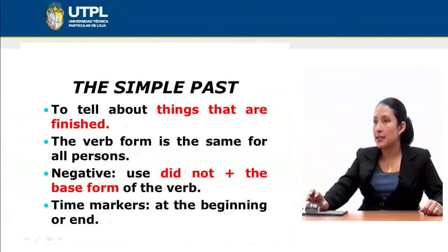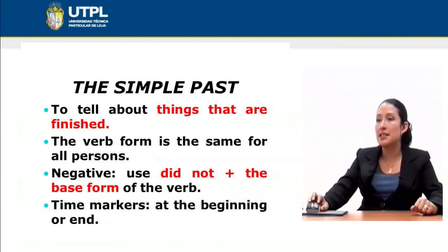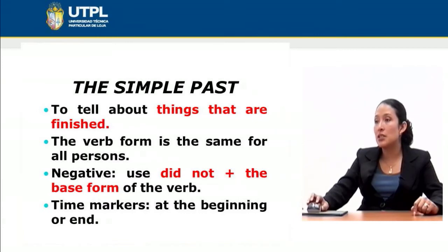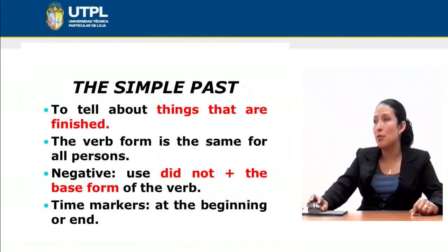Now let's move to the simple past tense. Since you know the simple present and the present progressive, it is time to understand the simple past. This structure is used to talk about things that are finished — actions that occurred in the past. The verb form is the same for all persons. For the negative, we use 'did' — an auxiliary — plus 'not'. In the simple past you just need 'did' plus the base form of the verb. Time markers appear at the beginning or at the end of a simple past sentence.